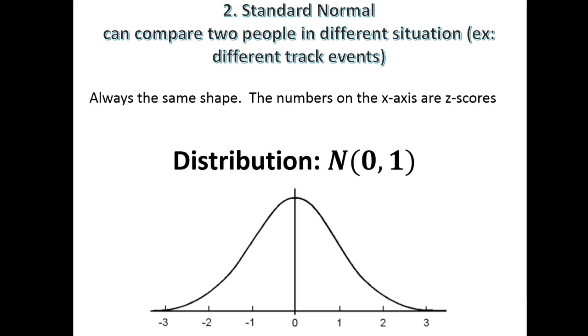We also have our standard normal. This is when we want to compare things, and we're talking about z-scores. Anytime I'm talking about a z-score, I'm on a standard normal curve. You can see the z-score is right down here, and it always has this distribution N(0,1). It's great for comparing data.